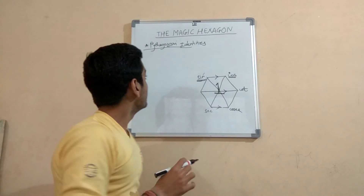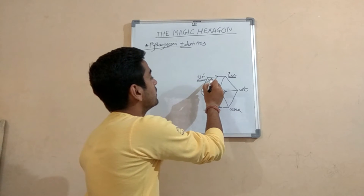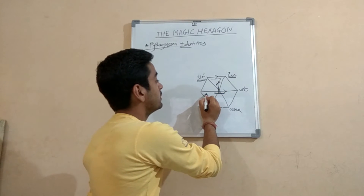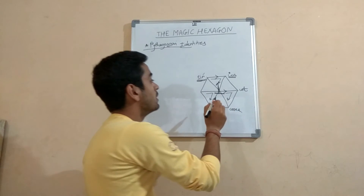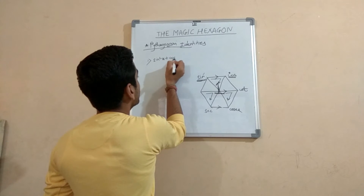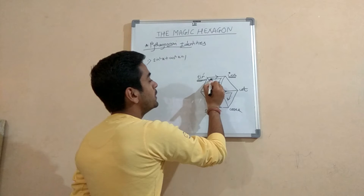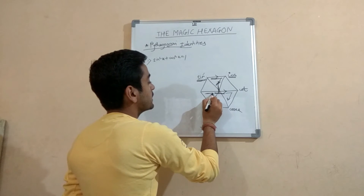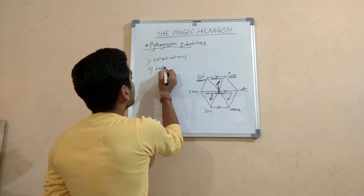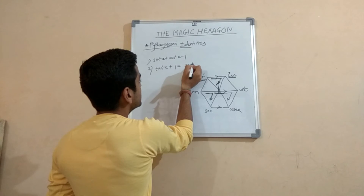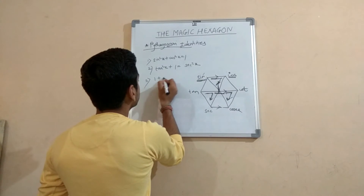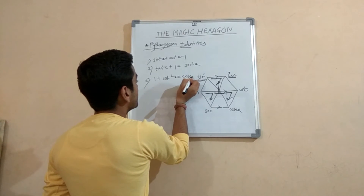For the Pythagorean identities, you go in the manner of an acute angle traveling clockwise through three parts of the hexagon. The first formula is sin²x + cos²x = 1, so the addition of these two is equal to 1. The second formula is tan²x + 1 = sec²x. The third formula is 1 + cot²x = cosec²x.